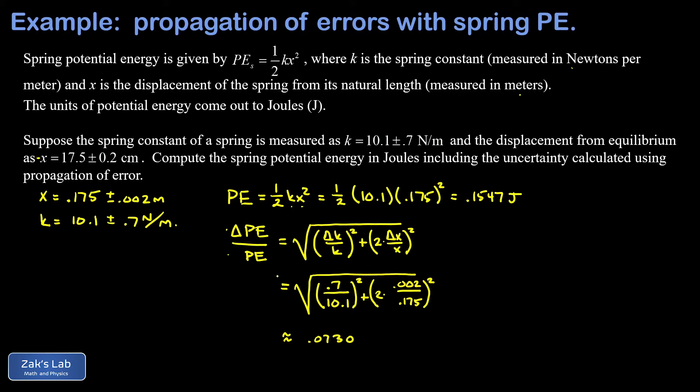Our potential energy was 0.1547 joules, our relative uncertainty was 0.0730, and I get an uncertainty of 0.011 joules. Ordinarily it's a convention in my classes to round the delta to one significant digit, so I'm going to write this as 0.01 joules.